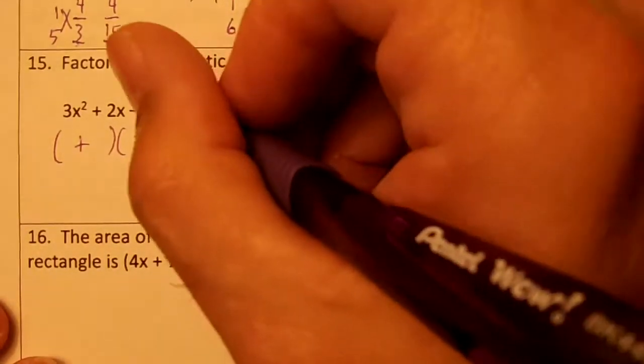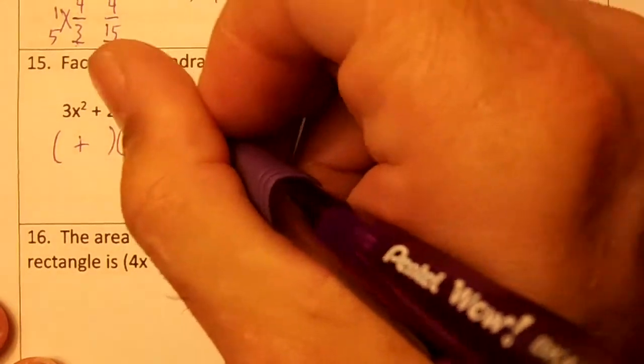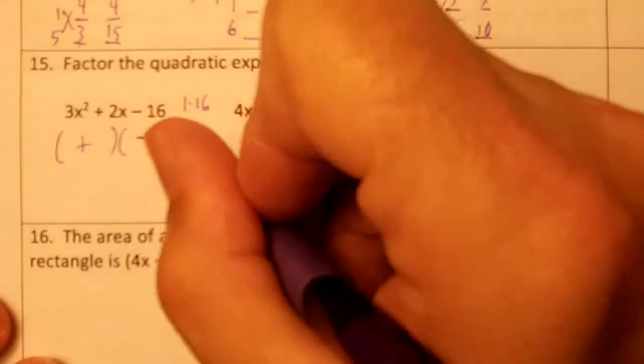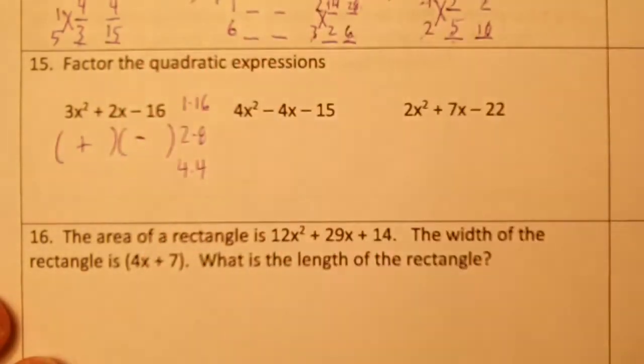We're going to write our factors of 16 out. 1 times 16 or 16, 2 times 8. 3 won't go into 16, but 4 will. Remember to get the factors, you're going to make a list of numbers.